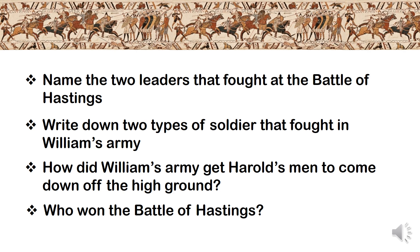Let's go through some of the answers. Question one: name two leaders that fought at the Battle of Hastings — that would be William of Normandy and Harold Godwinson. The two types of soldiers that fought in William's army: you could have knights and archers, or infantry. Infantry are normal soldiers with spears and swords. Knights were the ones that fought on horseback, and archers obviously fought with bows and arrows. Any two of those three would give you the correct answer.